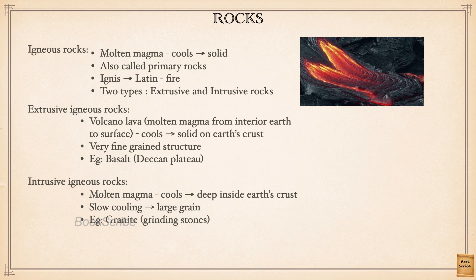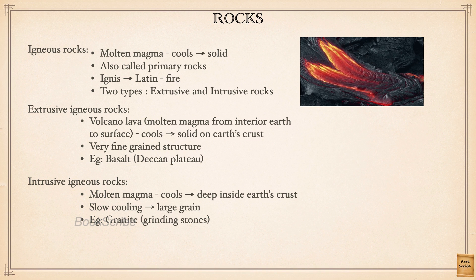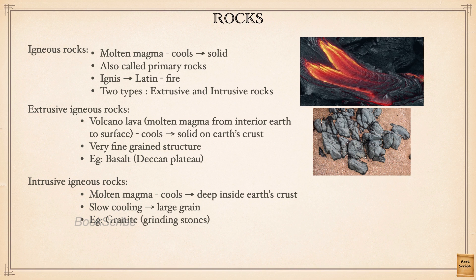There are two types of igneous rocks. One is extrusive igneous rocks. Lava from volcanoes — molten magma — comes out to the Earth's surface and cools down immediately, becoming solid. These rocks that form on the Earth's surface are called extrusive igneous rocks — extrusive meaning external or outside. They will be very fine-grained rocks. The best example is basalt; in our country the Deccan Plateau is made of basalt rocks.